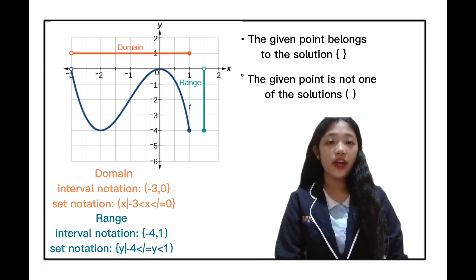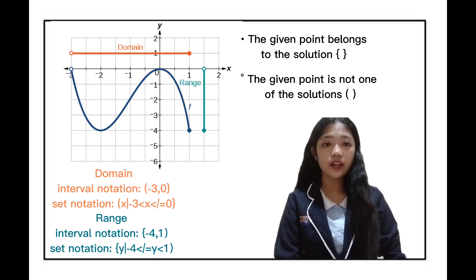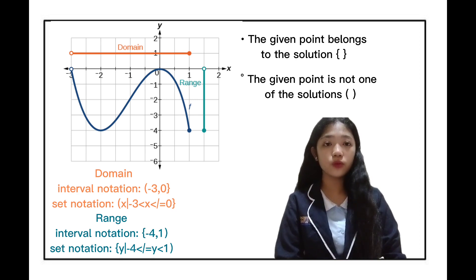Range is negative 4 and 1. In set notation: y such that y is greater than or equal to negative 4, y is greater than 1. Let's proceed to our next example.